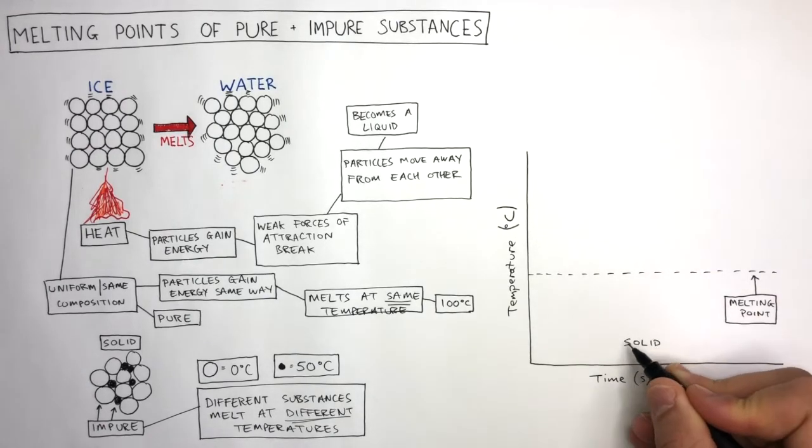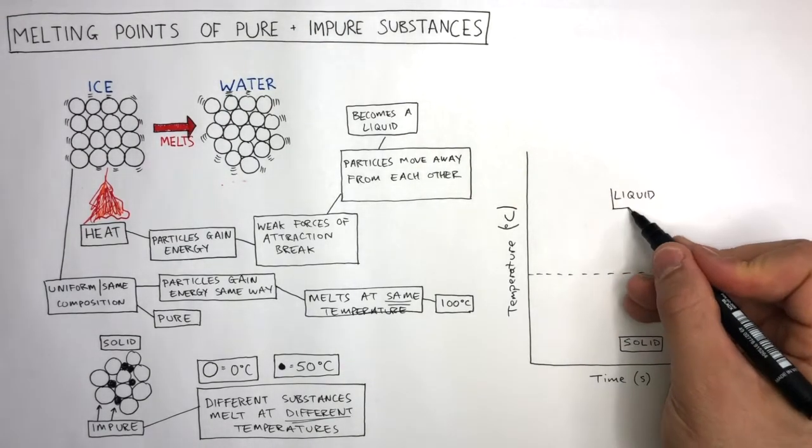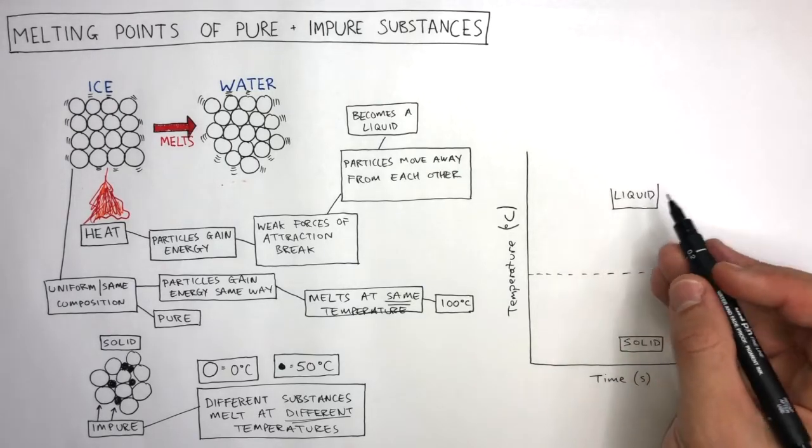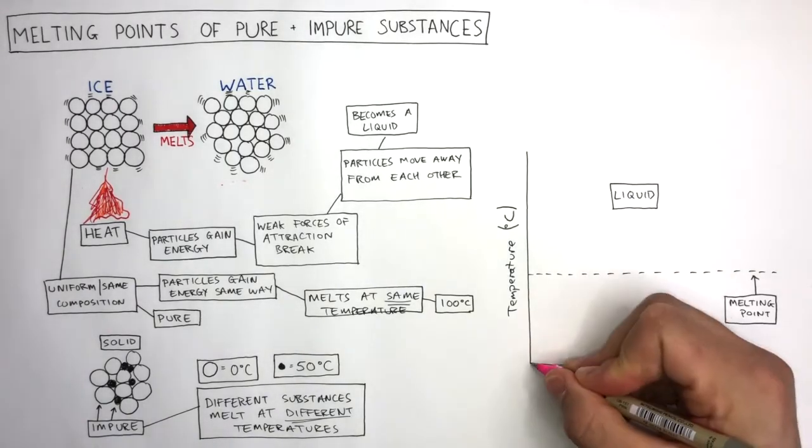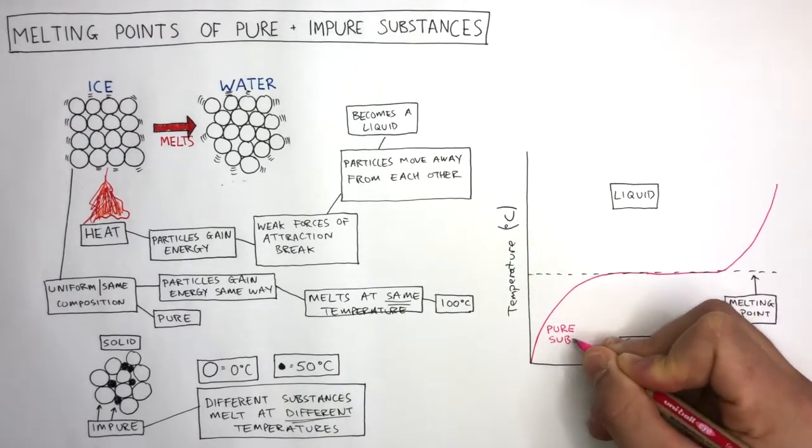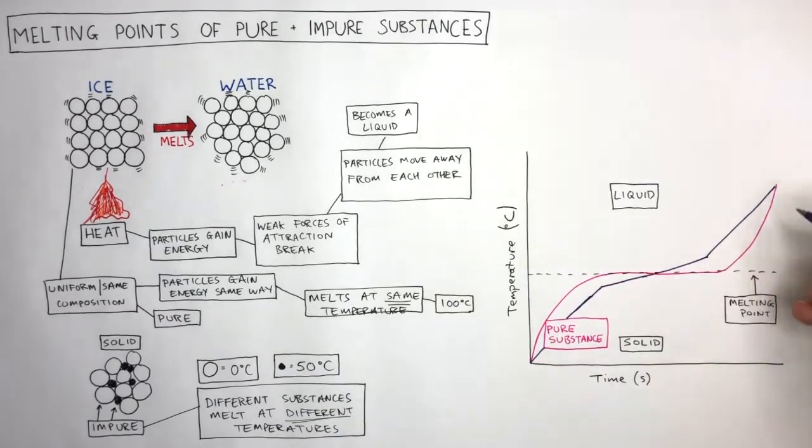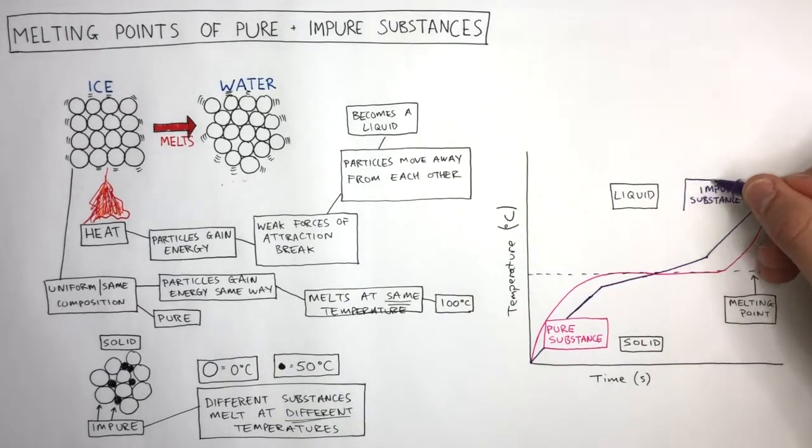If the temperature is below the dashed line, this means the substance is in a solid state. Whereas if the temperature is above the dashed line, it means the substance is in a liquid state. This pink line shows what happens to the temperature of a pure substance when it is heated, whereas this purple line shows what happens to the temperature of an impure substance when heated.